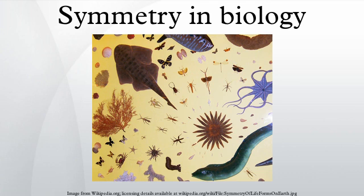Most radially symmetric animals are symmetrical about an axis extending from the center of the oral surface, which contains the mouth, to the center of the opposite aboral end. Radial symmetry is especially suitable for sessile animals such as the sea anemone, floating animals such as jellyfish, and slow-moving organisms such as starfish. Animals in the phyla Cnidaria and Echinodermata are radially symmetric, although many sea anemones and some corals have bilateral symmetry defined by a single structure, the siphonoglyph.